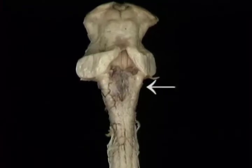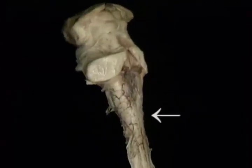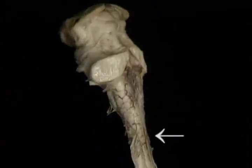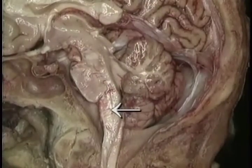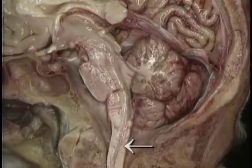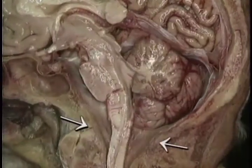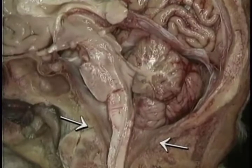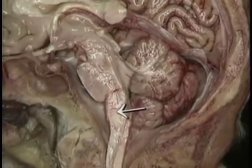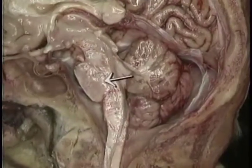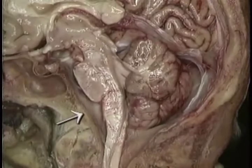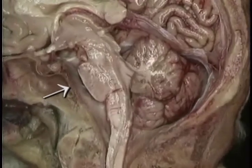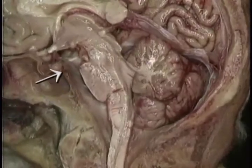The medulla is cone-shaped. It tapers down to become continuous with the spinal cord. The medulla becomes continuous with the spinal cord here at the foramen magnum. The medulla, the pons, and the midbrain are located just behind the basilar part of the occipital bone and the dorsum sellae.